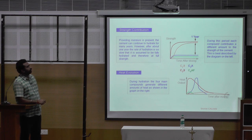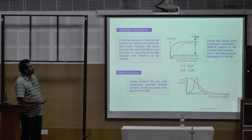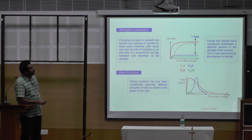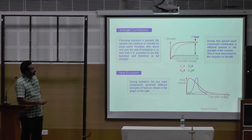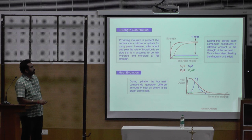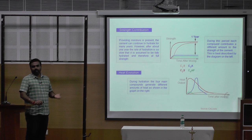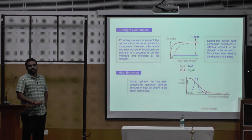For example, looking at strength contributions, you can see the graph showing strength over time after mixing. For one year, providing moisture is present, the cement can continue to hydrate for many years. However, after about one year, the rate of hydration slows and is assumed to be fully hydrated, achieving full strength. This is presented with all the compositions — C₃A, C₂S, C₃S, and C₄AF. Different colors represent different compounds: for example, C₂S shows how over one year the proportion develops. Similarly, a graph represents the heat evolved during the hydration process. When you understand these basics about the materials, it will be easy to project this in higher level research and easy to predict and interpret the data arrived from the experimental part.